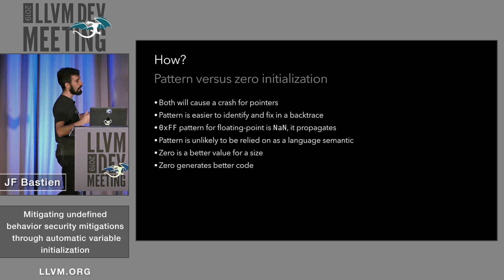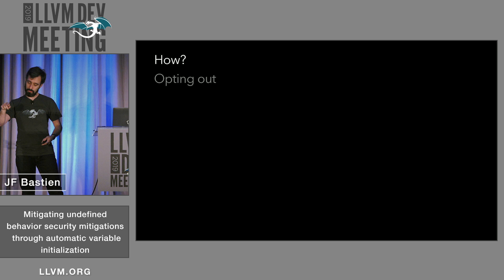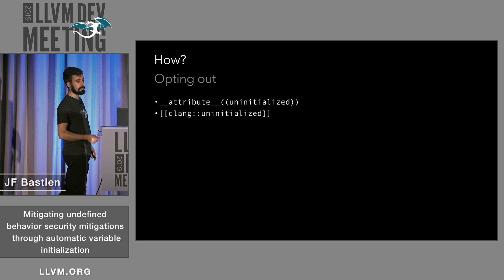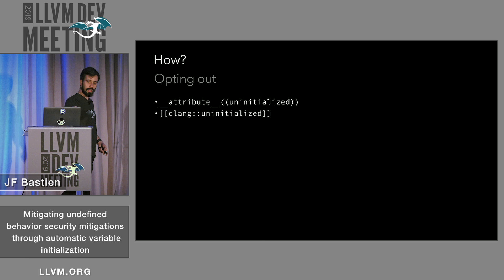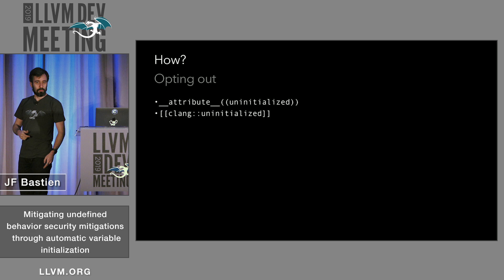You can also opt out. You can use a C-style or C++ attribute to say this thing is intentionally uninitialized. When you see that, you can grep for it, run git blame, and figure out who was convinced the value was initialized when you eventually find an exploit in that code.